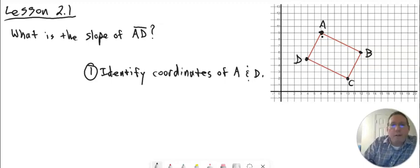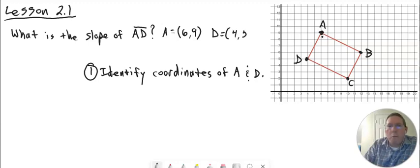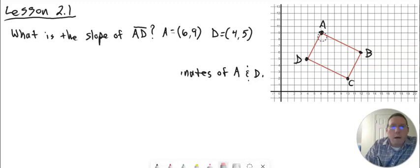Let's go ahead and identify the coordinates of A and D. Point A is at the coordinates 6, 9 — the X coordinate is 6, the Y coordinate is 9. Point D is at the point 4, 5 — X is 4, Y is 5. So we have identified the coordinates of A and D. That's step 1.